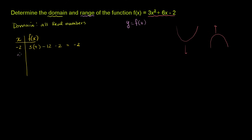When x is equal to negative 1, this is 3 times negative 1 squared, which is 1, plus 6 times negative 1, which is minus 6, and then minus 2. So this is 3 minus 6 minus 2, which equals negative 5. And that is actually the vertex. The formula for the vertex is negative b over 2a: negative 6 over 2 times 3, which equals negative 1. So x = -1 is the vertex.